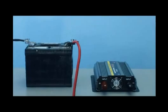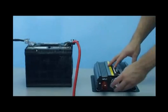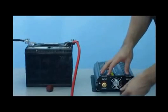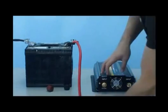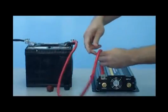We'll first start by removing the coverings from the terminal loops. Once these coverings are removed, we'll then take the battery cables and connect them securely to the inverter.